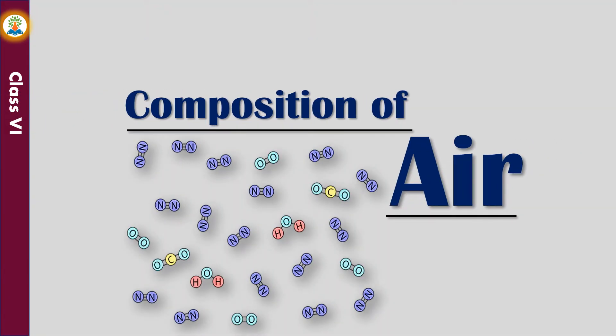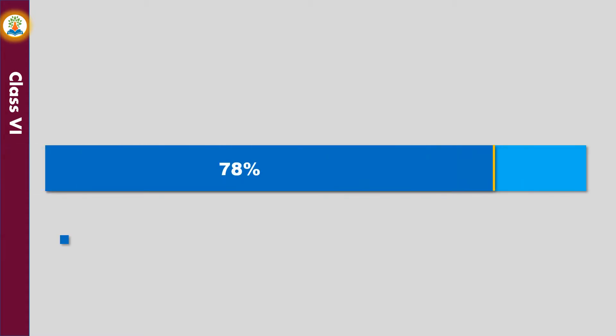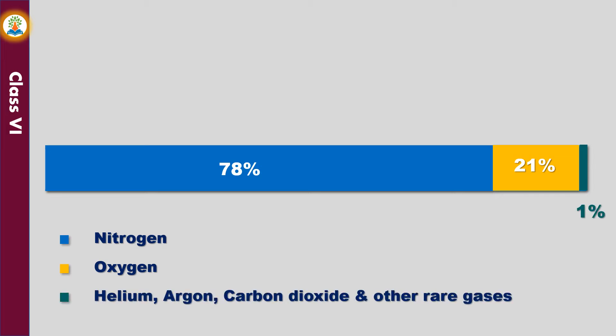Composition of air. Air is a mixture of gases consisting mainly of nitrogen 78%, oxygen 21%, and helium, argon, carbon dioxide and other gases as one percent. Water vapor and dust particles are also present in the air. However, their percentage in air varies from one place to another and from time to time.